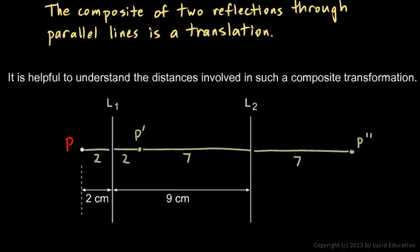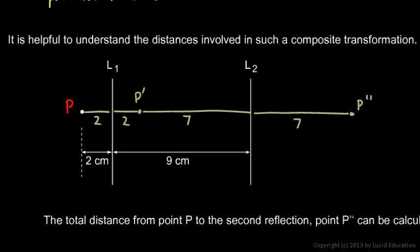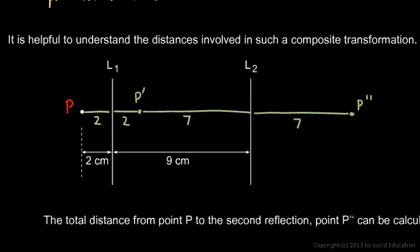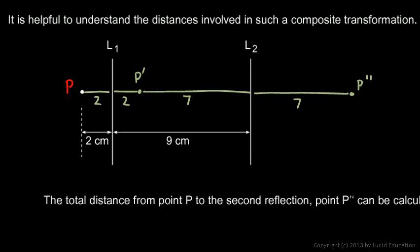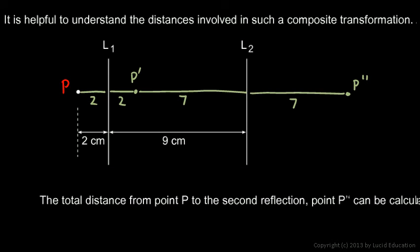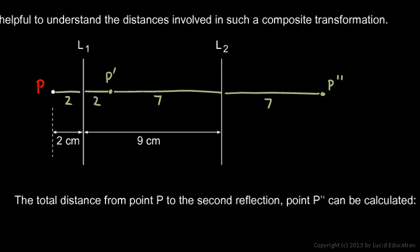And then notice what it says next in the notes there. It says the total distance from point P to the second reflection, point P prime prime, can be calculated. Okay, so this total distance starting at P going all the way over here can be calculated. And that's obviously going to be two plus two plus seven plus seven. So that's easy. Two plus two plus seven plus seven. That's four plus fourteen, right? That comes out to 18. And these distances are in centimeters, 18 centimeters.